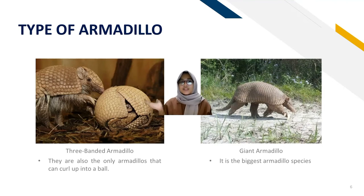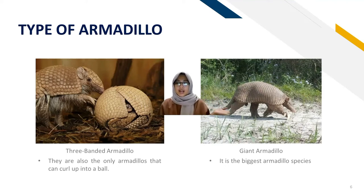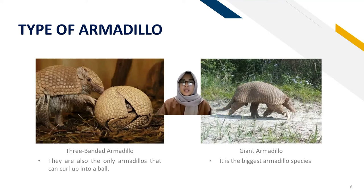The three-banded armadillo lives in Brazil and is distinguished by three bands on its back and a blackish-brown color. The giant armadillo is the biggest armadillo species and lives in South America, including Argentina and Venezuela.